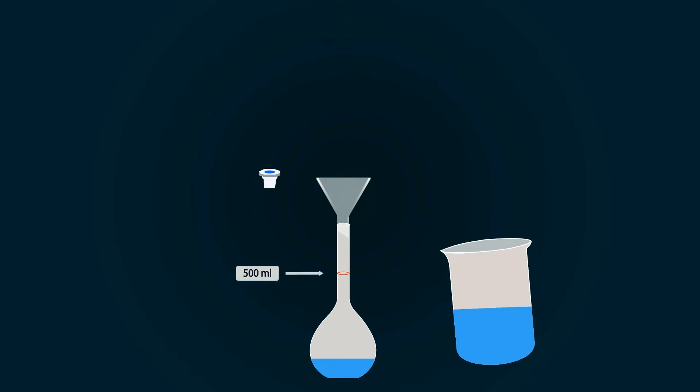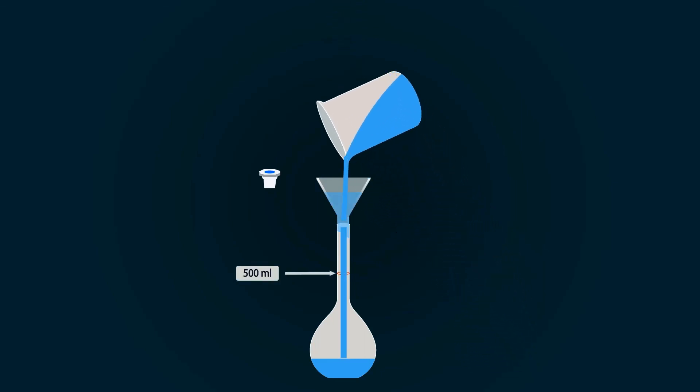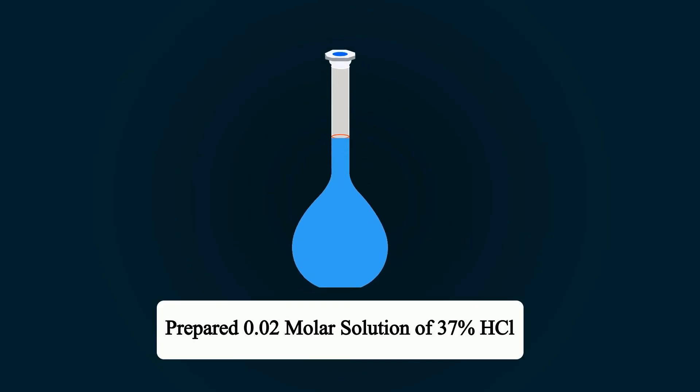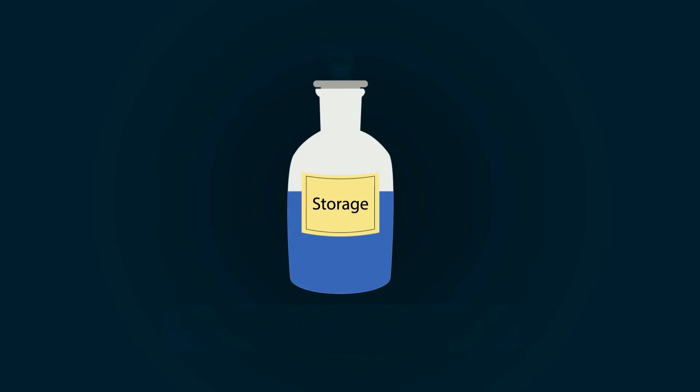Fill the volumetric flask with distilled water up to the 500 milliliter mark. You have successfully prepared a 0.02 molar solution of 37% HCl. You can store it in any bottle you want. Thank you.